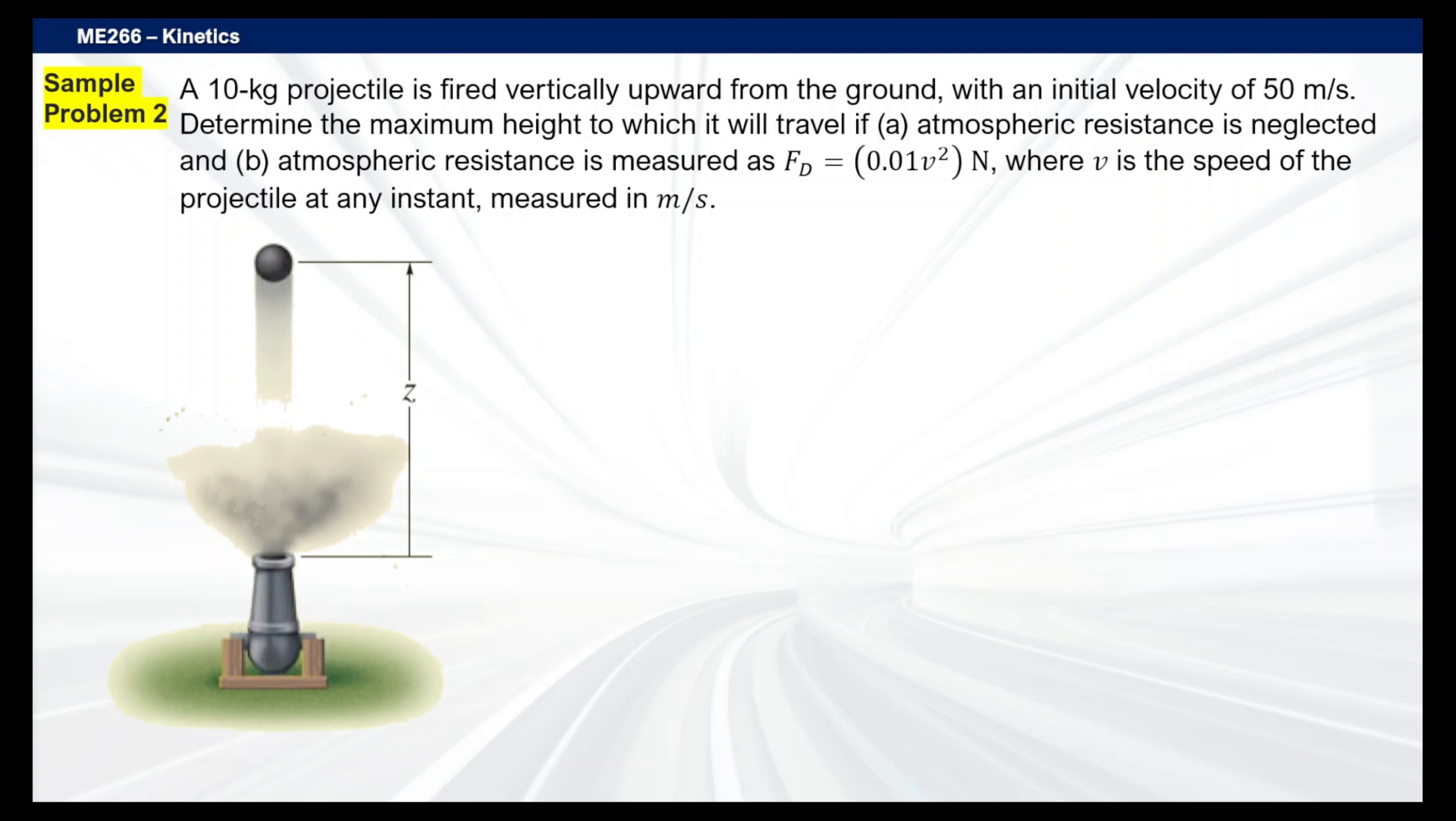So we were given two scenarios: A, if we're going to neglect air resistance or atmospheric resistance, and B, we have to consider the atmospheric resistance, which is given this particular equation: FD equals 0.01 V squared Newtons, where V here is the speed of the projectile at any instant measured in meters per second. Now that we know our givens here, we'll start solving the condition for A.